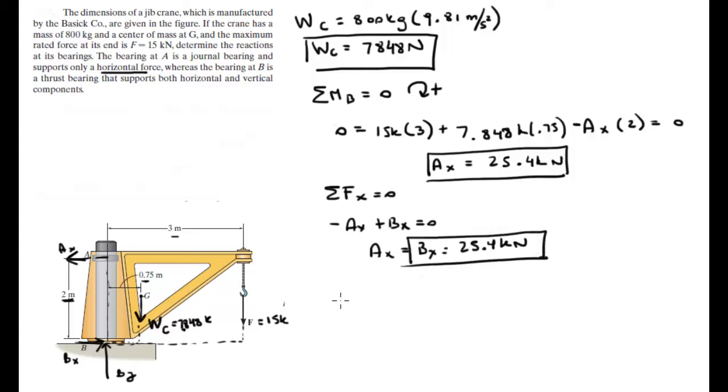And the last one will be to find By and that one's very easy to find too because you know that the sum of the forces on the y is equal to 0, so we got the weight coming down Wc plus By minus the 15 kilonewton force and all of that is equal to 0.